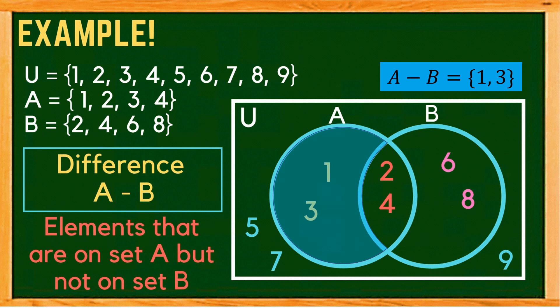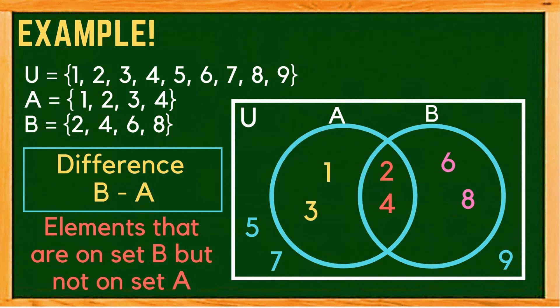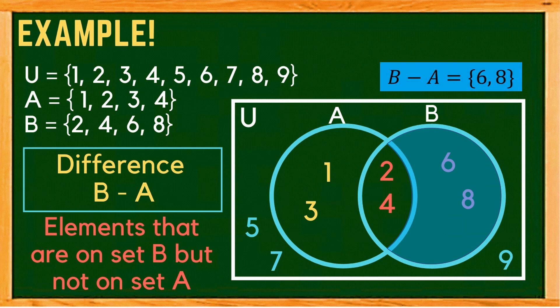What if we are looking for the difference of B and A, or B minus A? These are the elements that are in set B but not in set A. On the Venn diagram, the shaded region represents B minus A, and the elements are 6 and 8.